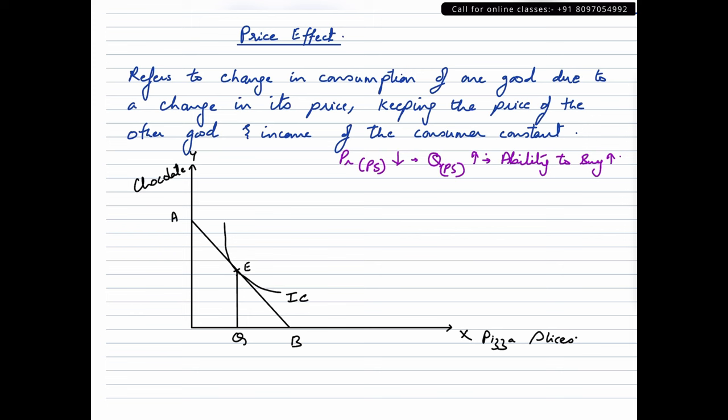When that happens, the budget line would rotate to the right. Let us say this is how the budget line has rotated. Let's name it as AB1. And let us say this is the new indifference curve, IC1, and this is E1. So this point at tangency, this is the quantity Q1 that the consumer is buying for pizza slices.